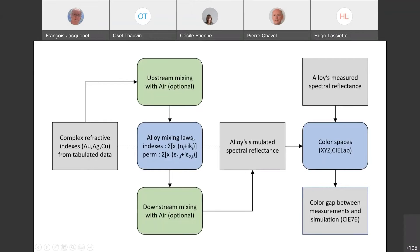Then we apply the alloy mixing laws. For the mixing laws, we used two linear formulas: one on the indexes and one on the permittivities. Instead of applying the mixing law with air on the pure metal, we can apply it directly on the alloy.